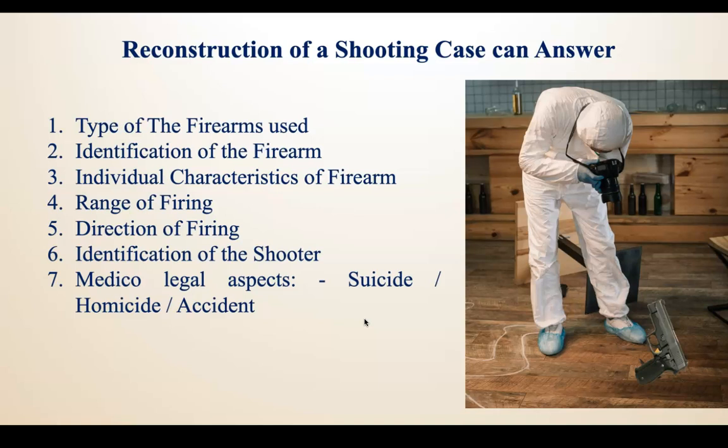The forensic ballistic expert must answer several questions in any shooting case. First is the type of firearm used — whether it is a handgun, shoulder gun, revolver, pistol, or rifle, and what specific type. Second is identification of the firearm — whether the alleged firearm produced as evidence is the same firearm used in the case, linking the firearm to the crime.